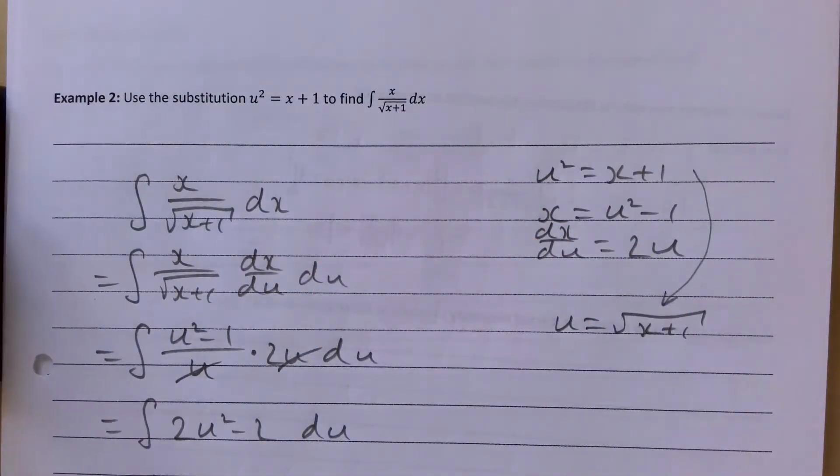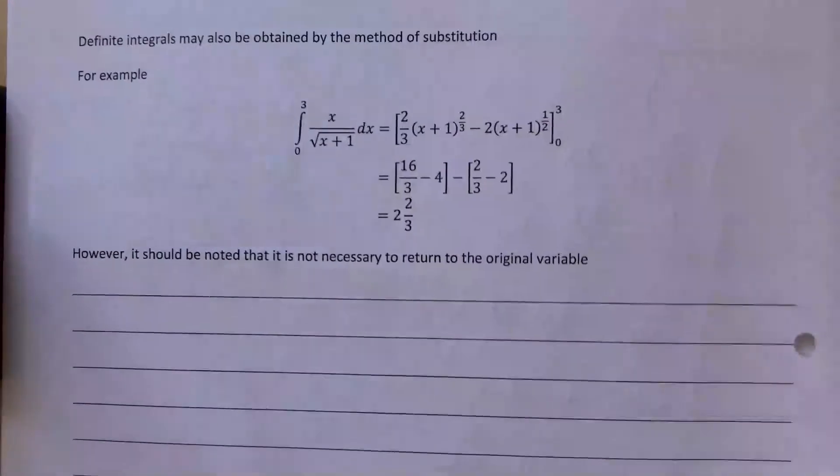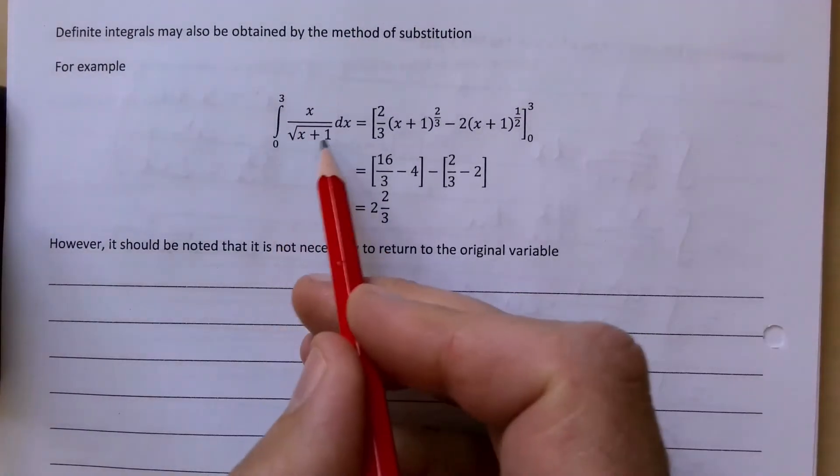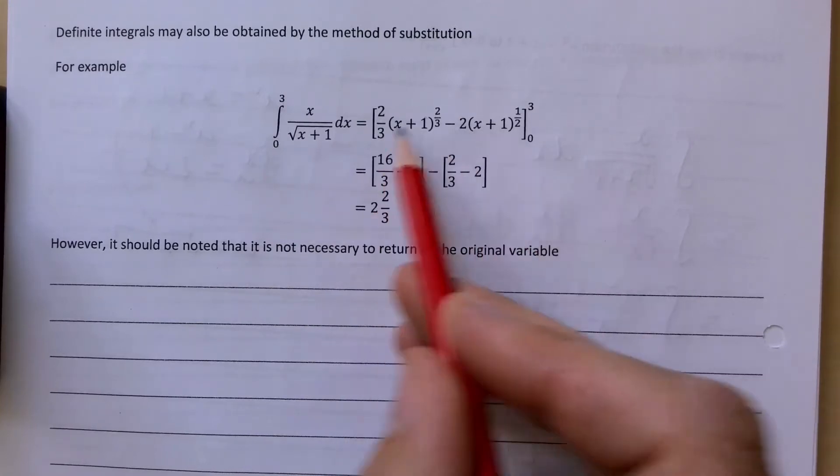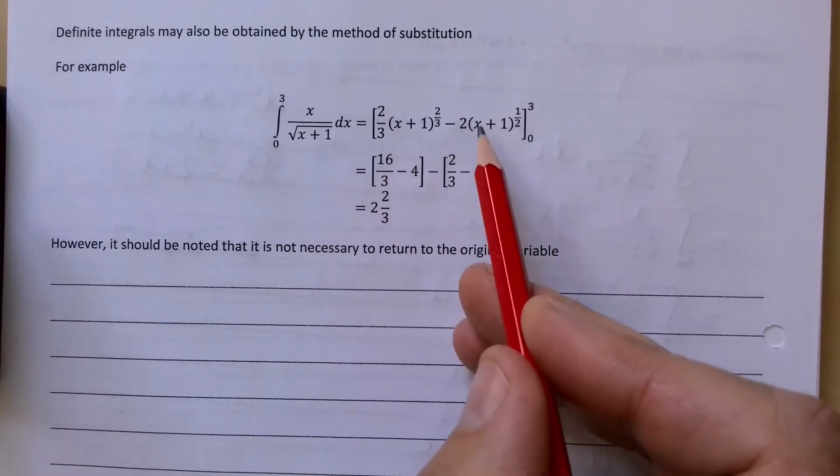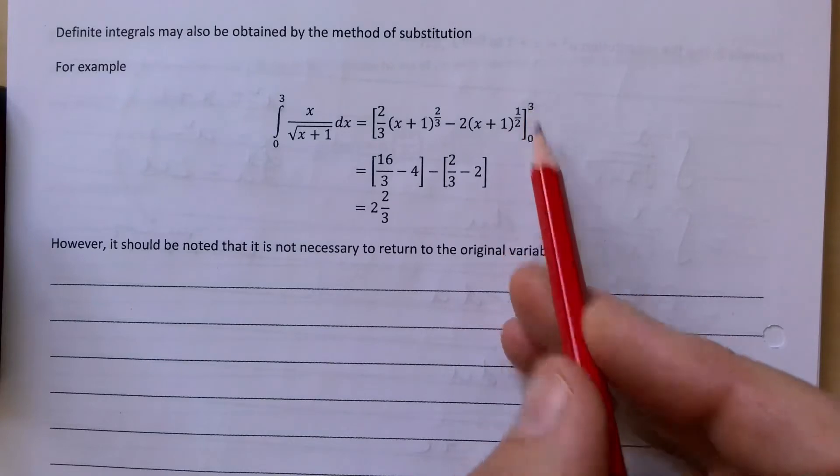For the previous example it was x over the square root of x plus 1. If I add the 3 and the 0 here once we have it integrated, we set it up like that. And if you remember, factorizing it, subbing in your 3 and 0, we can get our values and it gives 2 and 2 thirds.